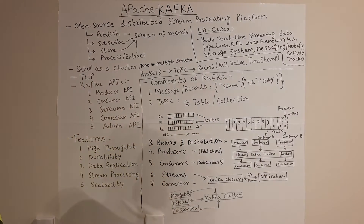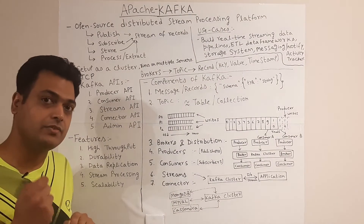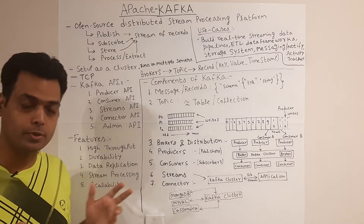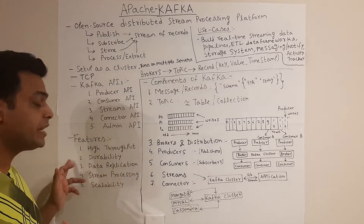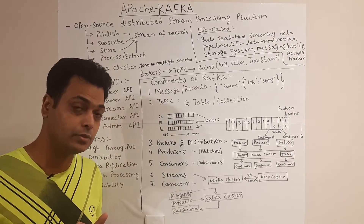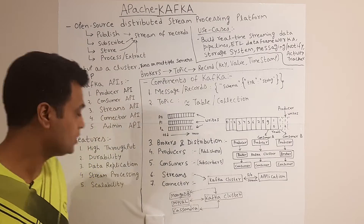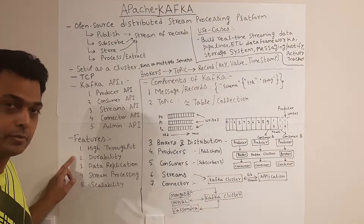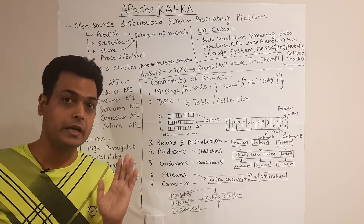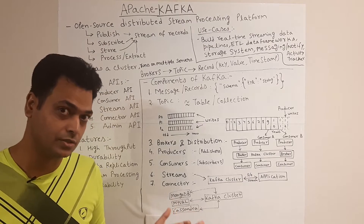Let us try to understand the basic features of Kafka and why it is so popular. Kafka has high throughput, it is highly durable — you write the real-time data, you persist that data, and you can retrieve it at a later point of time as well. It also supports data replication.